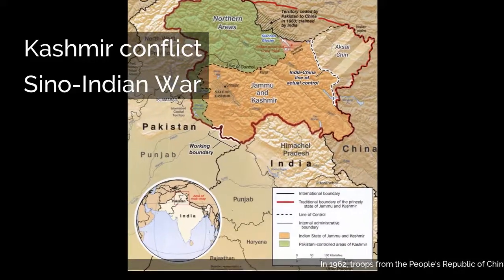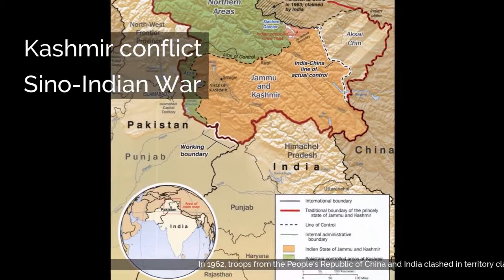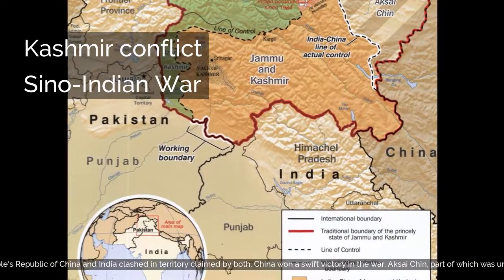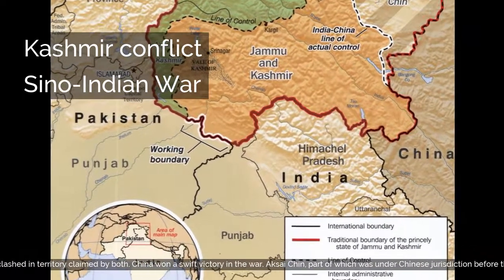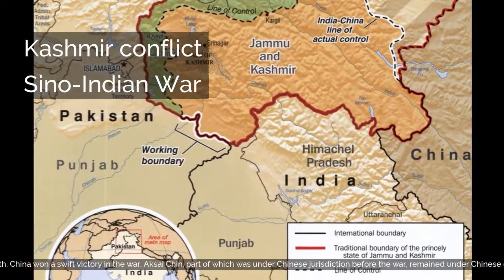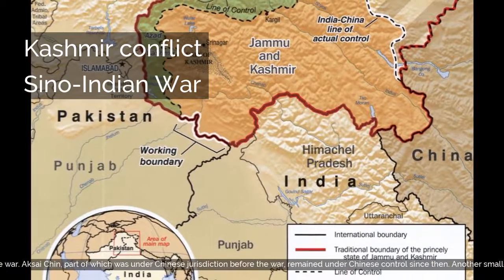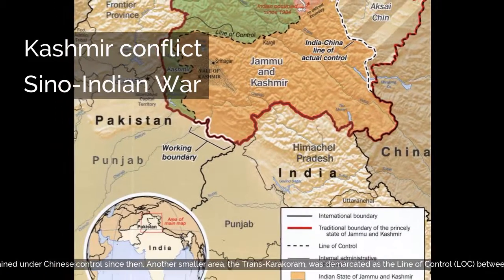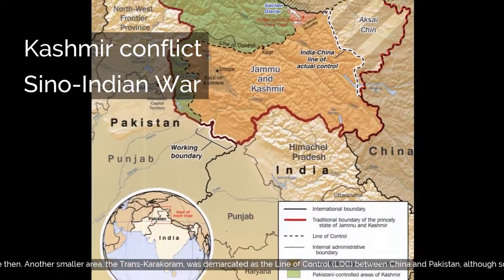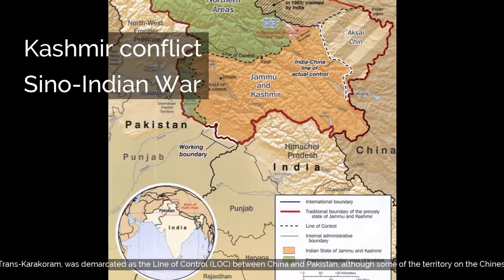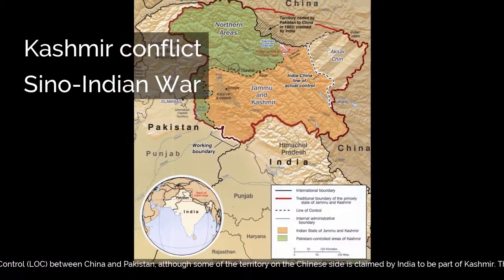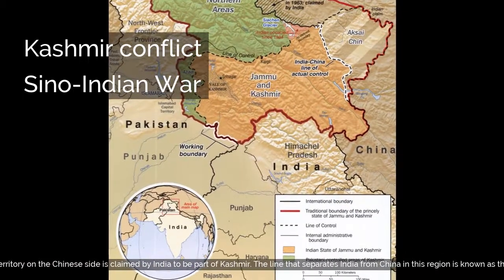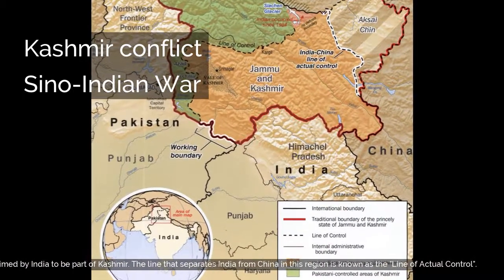In 1962, troops from the People's Republic of China and India clashed in territory claimed by both. China won a swift victory in the war. Aksai Chin, part of which was under Chinese jurisdiction before the war, remained under Chinese control since then. Another smaller area, the Trans-Karakoram, was demarcated as the line of control between China and Pakistan, although some of the territory on the Chinese side is claimed by India to be part of Kashmir. The line that separates India from China in this region is known as the line of actual control.